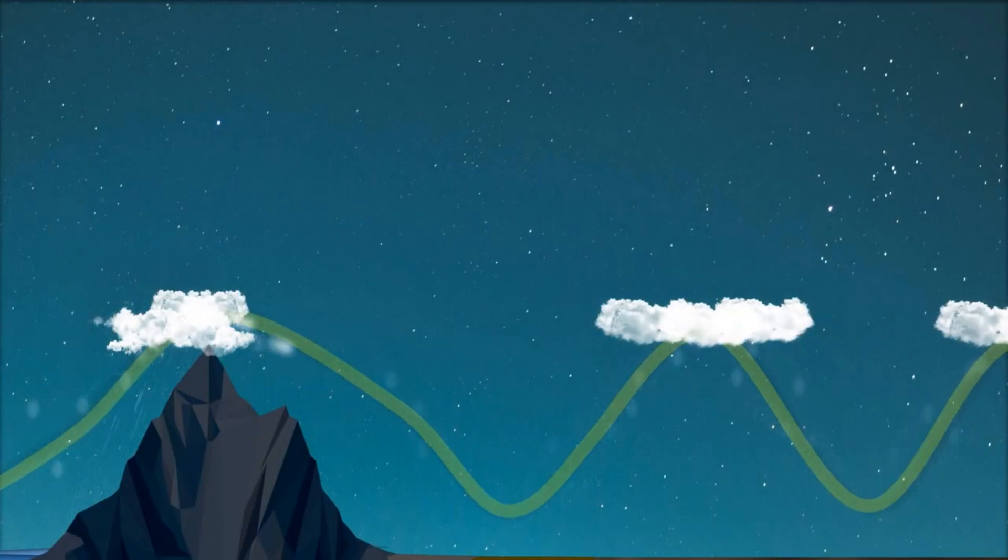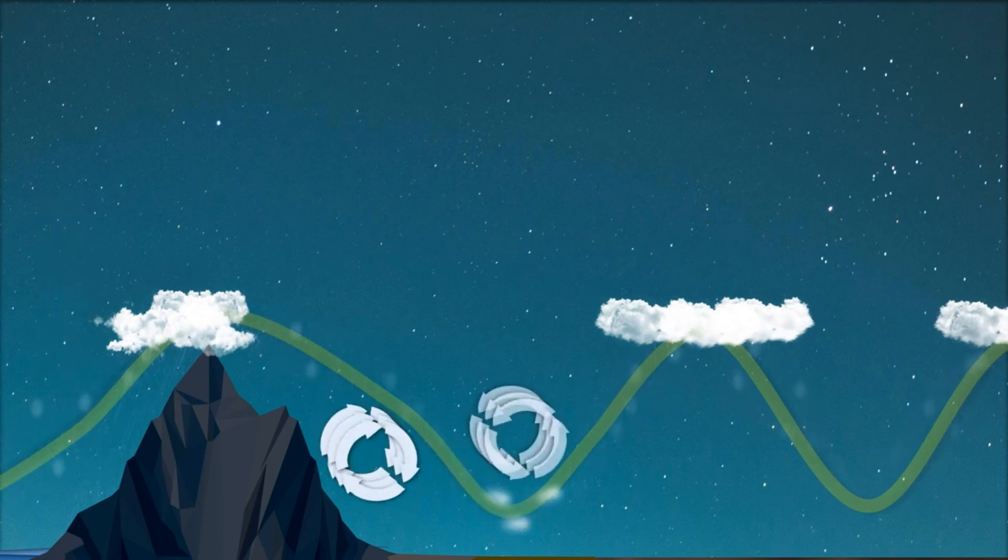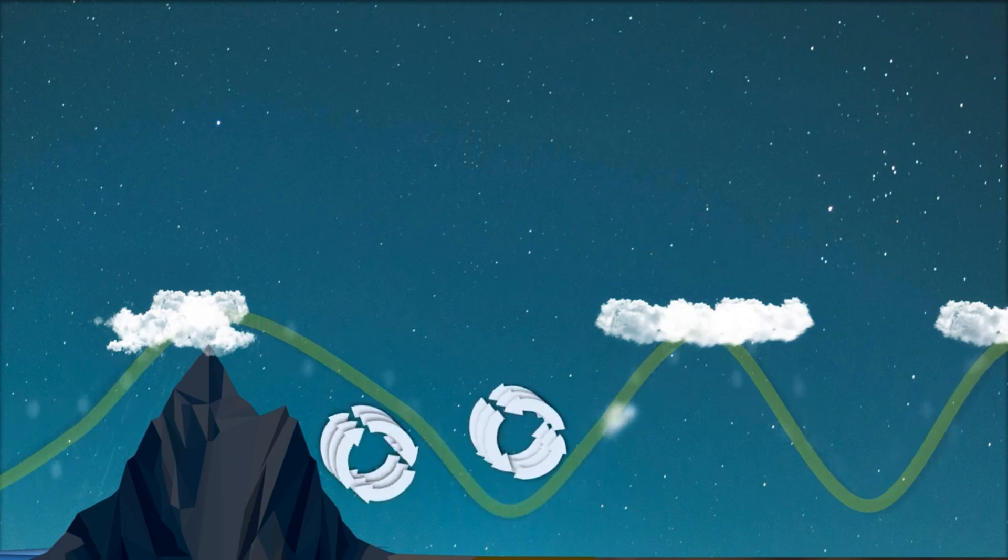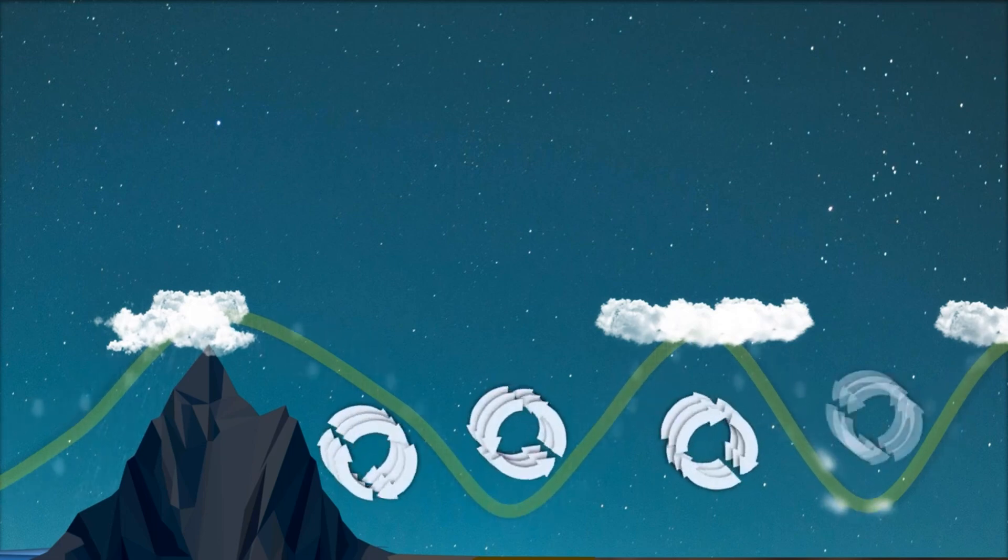As the wind flow goes down the leeward side of a mountain, it creates rotors that rotate clockwise. Then, going up, creates rotors moving counterclockwise. And as it goes back down, creates rotors moving clockwise again.